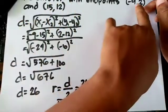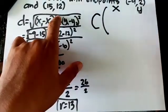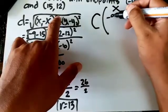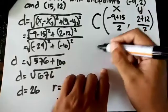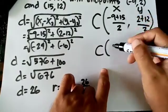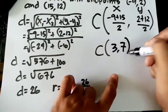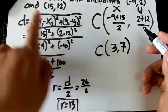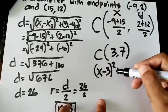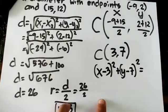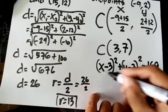Now find the center using the midpoint formula: x = (-9+15)/2 = 6/2 = 3, and y = (2+12)/2 = 14/2 = 7. So the center is (3, 7) and radius is 13. The standard equation is (x-3)² + (y-7)² = 169.